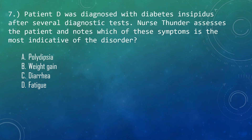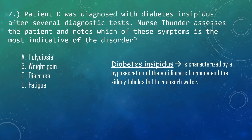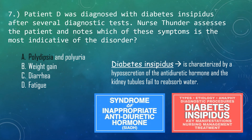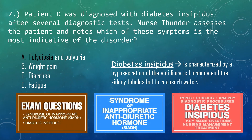Question 7: Patient D was diagnosed with diabetes insipidus after several diagnostic tests. Nurse Thunder assesses the patient and notes which symptom is most indicative of the disorder. Diabetes insipidus is characterized by hyposecretion of the antidiuretic hormone and the kidney tubules fail to reabsorb water. Polydipsia and polyuria are classic symptoms of diabetes insipidus; the urine is pale and the specific gravity is low. Anorexia and weight loss also occur. For more information about diabetes insipidus and syndrome of inappropriate antidiuretic hormone, check the link in the description below.